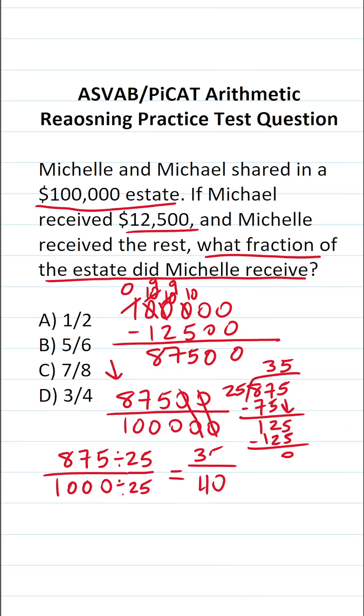So this becomes 35 over 40. You should recognize now that 35 and 40 have a common factor of 5. 35 divided by 5 is 7. 40 divided by 5 is 8. So clearly, Michelle received 7 eighths of the total estate. So this one is C.